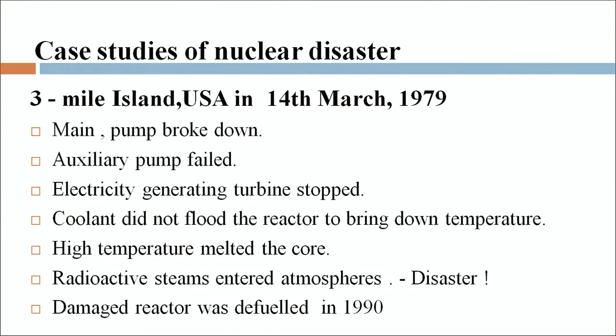Two nuclear disaster case studies are discussed. First, Three Mile Island, USA, on 14th March 1979: there was a breakdown of the main pump, auxiliary pumps failed to operate, and the electricity-generating turbine stopped. Emergency coolant should have flooded the reactor to bring down the temperature; the coolant did start to flow but did not cool the reactor, while a faulty meter showed otherwise. The high temperature resulted in core meltdown and radioactive steam was released into the atmosphere. Pregnant women and children were removed from the site. It was over a year before anyone could re-enter the plant, and the damaged reactor was eventually defuelled in 1990.